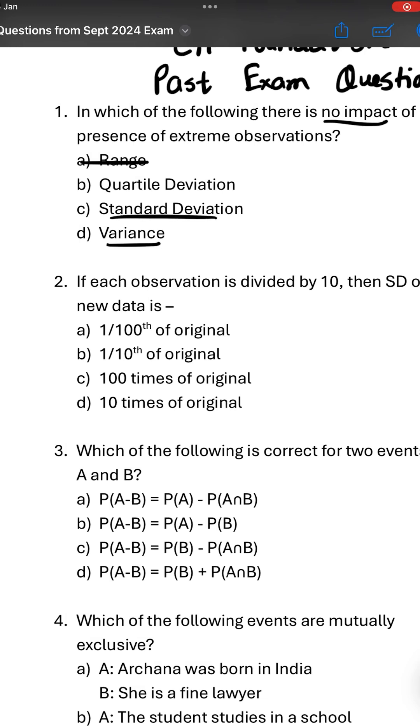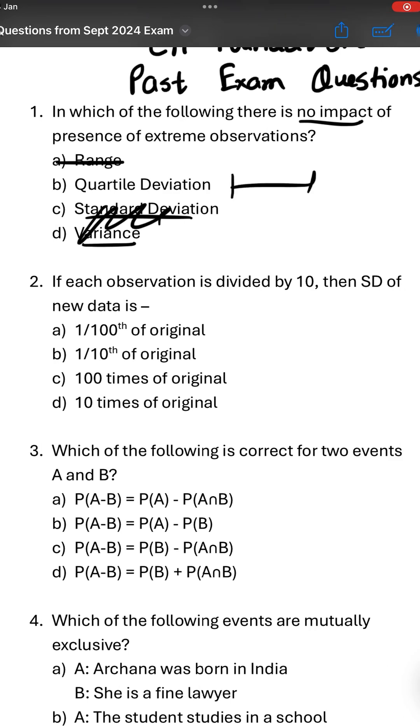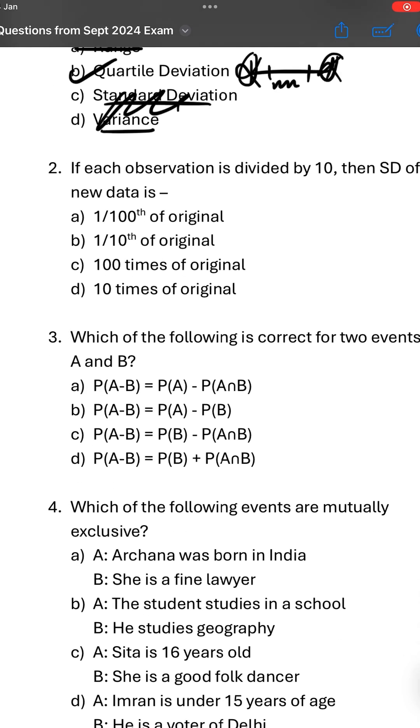SD and variance are also not correct because we consider all observations for SD and variance including highest and lowest. But in QD we consider only the middle 50% observation and ignore the extreme observations. So QD is the correct answer.